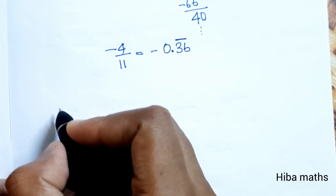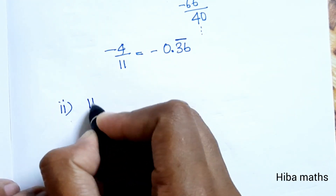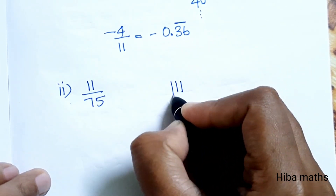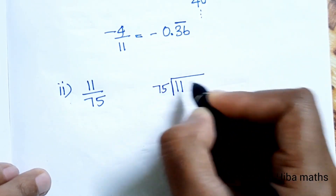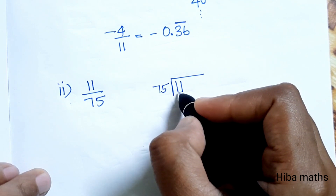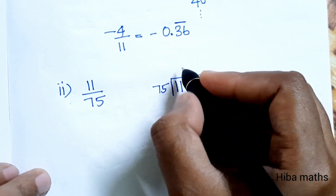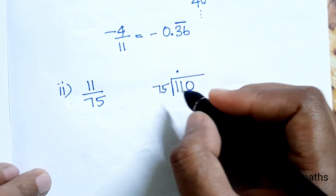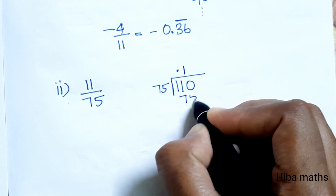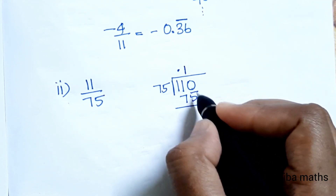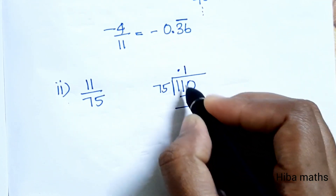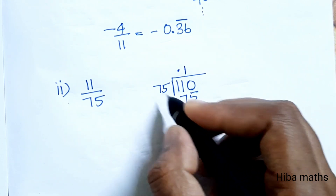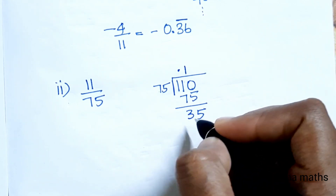The second subdivision is 11 by 75. So 11 is the dividend and 75 is the divisor. In the 75 times table, 11 is very small, so we place a decimal point and write 0. One time 75 is 75. 110 minus 75 is 35, and 350 divided by 75 gives the next digit.